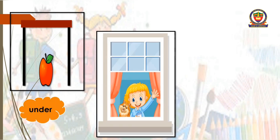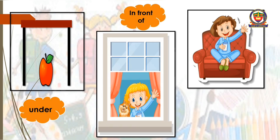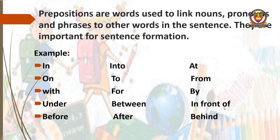Next, there are certain other important words. Like in this picture, we are seeing that apple is under the table. In another picture, a girl is standing in front of a window. This boy is sitting on the sofa. So the words like under, in front of, and on — these words are used to join sentences and make them more meaningful. They are called prepositions. Prepositions are words used to link nouns, pronouns and phrases to other words in the sentence. They are important for sentence formation.